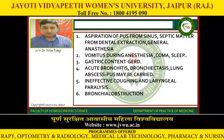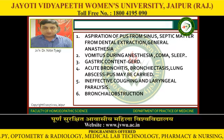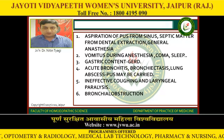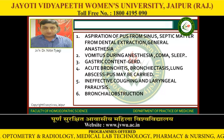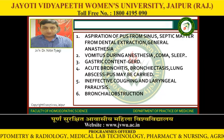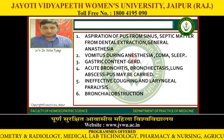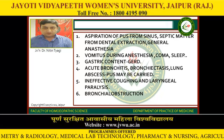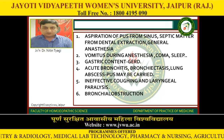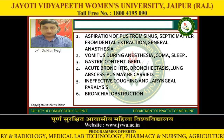Predisposing factors for secondary pneumonia include aspiration of pus from sinuses, septic matter from dental extraction, and general anaesthesia. Aspiration of vomitus during anaesthesia, coma, and sleep, or gastric contents as in GERD. Acute bronchitis, bronchiectasis, and lung abscess where pus may be carried to the lungs. Ineffective coughing, laryngeal paralysis, and bronchial obstruction.